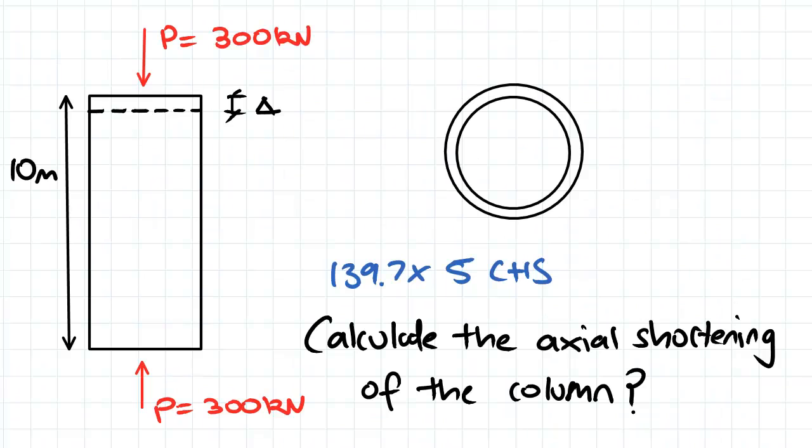Let's look at the question here. We've got our column here, it's got a force of 300 kN applied to it, putting it in compression. It's got a total length of 10 m and it's a 139.7 times 5 CHS.